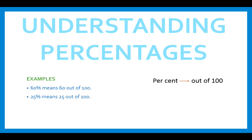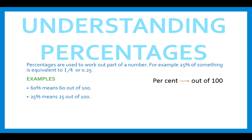So, examples: 60% means 60 out of 100, and 25% means 25 out of 100. Basically, percentages are a number written out of 100 — you have a percentage over 100, so it's a bit like a fraction. Percentages are used to work out parts of numbers, so for example 25% of something is equivalent to one quarter or 0.25, depending on whether you're working with percentages, fractions, or decimals.